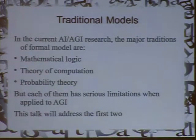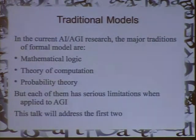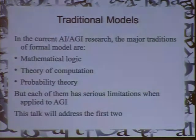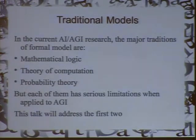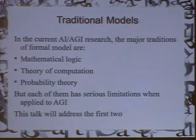So, what's the current situation? In my opinion, the current traditional models used in AGI — the most influential schools — include mathematical logic, theory of computation, and probability theory. There are some minor ones, but I think these three are the most influential schools. In this talk, I will address my opinion about the first two. In the afternoon workshop, I will talk about my opinion about probability theory. Here is the summary.